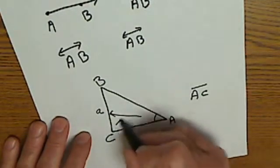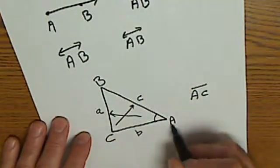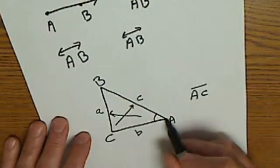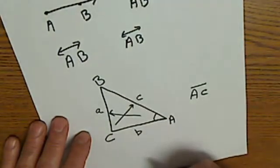So that is side a, side c, side b. Uppercase is the measure of an angle, lowercase is the length of a side opposite that given angle.